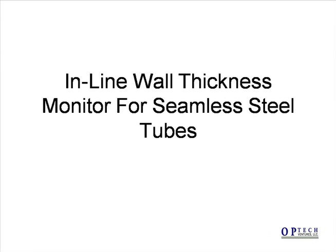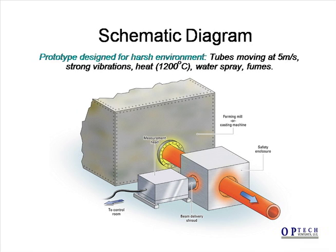The first application is an inline wall thickness monitor for seamless steel tubes. The requirement was to monitor the wall thickness of hot tubes as they exit a forming mill. A measurement head containing both lasers is placed alongside the tube as it exits the mill. Both laser beams are directed to the tube surface, and a shroud surrounds the measurement position for the purpose of eye safety.